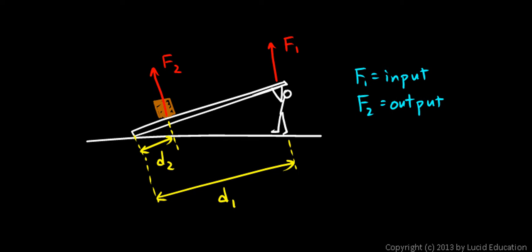And then the math works out the same. If d1 is 10 feet and d2 is 2 feet like we had before, then d1 is five times as large as d2. So the output force ends up being five times as great as the input force, but the output distance ends up being only one-fifth.